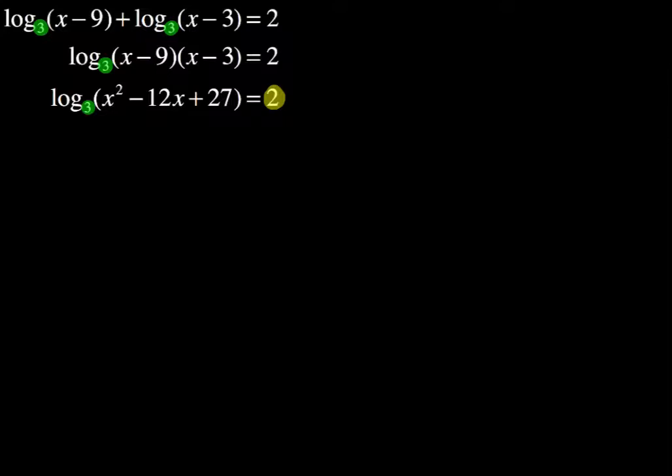So that is going to become x squared minus 12x plus 27 equals 3 to the power of 2. Notice our exponent is right there, and our base is 3, which is right there as well. And we all know that 3 squared is not 6. Don't say 6. Please don't say 6 because 3 squared is 9. So x squared minus 12x plus 27 equals 9. When you subtract 9 from both sides, you will end up with x squared minus 12x plus 18 equals 0.